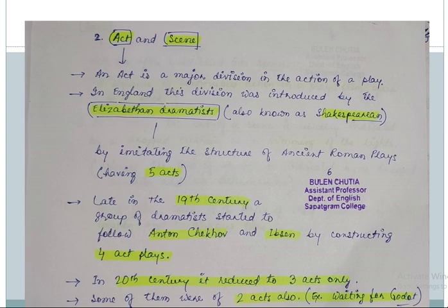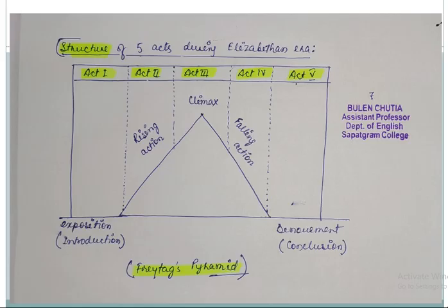So let's understand the structure of five acts during the Elizabethan era or the Roman era. In the first act the play is introduced. That is the exposition of the play. The audience are introduced with the characters of the play, the story of the play, the background of the play. This is the first act.